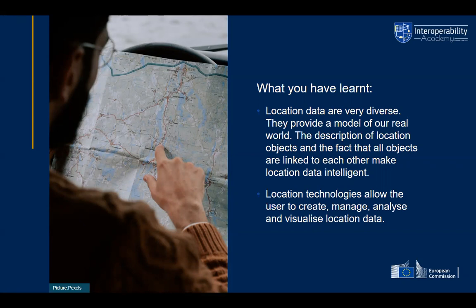In summary, location data is not one type of data but very diverse. Most importantly, location data provides a model of the real world — this relationship is key and is the base for making location data intelligent. We link location objects to each other and to other information to get new insights. Location technologies allow users to create, manage, analyze, and visualize location data, enabling us to answer the location-related questions raised in Chapter 1. With this, Chapter 2 has come to an end. Thank you.